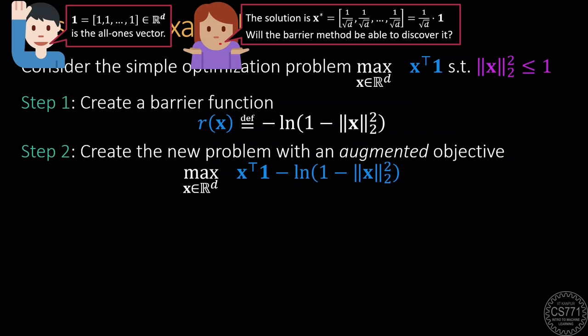However, we realize at this point that we have made a mistake. The original problem is a maximization problem and our barrier function shoots up to infinity at every unit norm vector x. Thus, this new optimization problem will have infinitely many solutions, each of which gives an infinite objective value. This is clearly wrong.